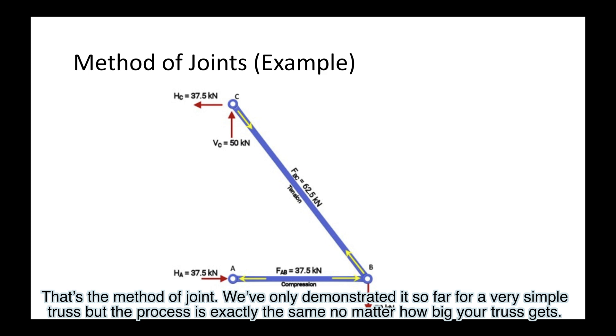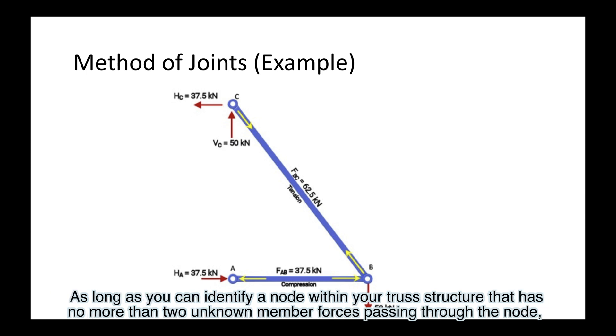That's the method of joints. We've only demonstrated it so far for a very simple truss, but the process is exactly the same no matter how big your truss gets, as long as you can identify a node within your truss structure that has no more than two unknown member forces passing through the node.